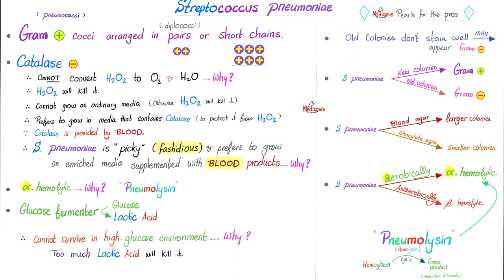If you provide the bacteria with a medium containing catalase, the bacteria can now break down H₂O₂ into harmless components and grow on your petri dish. When bacteria is picky, we call it fastidious. Strep pneumo has fastidious nutritional requirements — it prefers to grow on enriched mediums supplemented with blood and blood products. Strep pneumo is alpha-hemolytic because it has pneumolysin, which is similar to streptolysin and is technically a hemolysin.